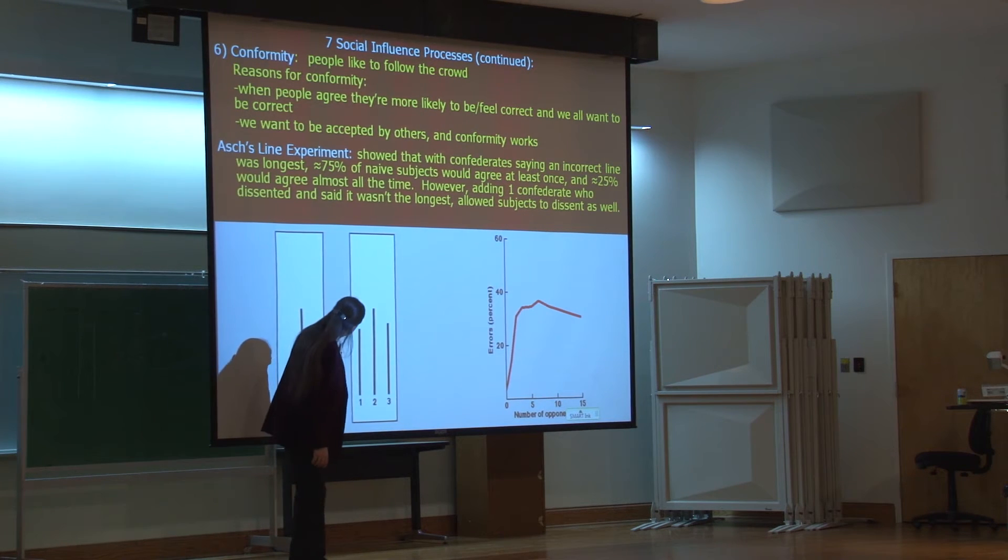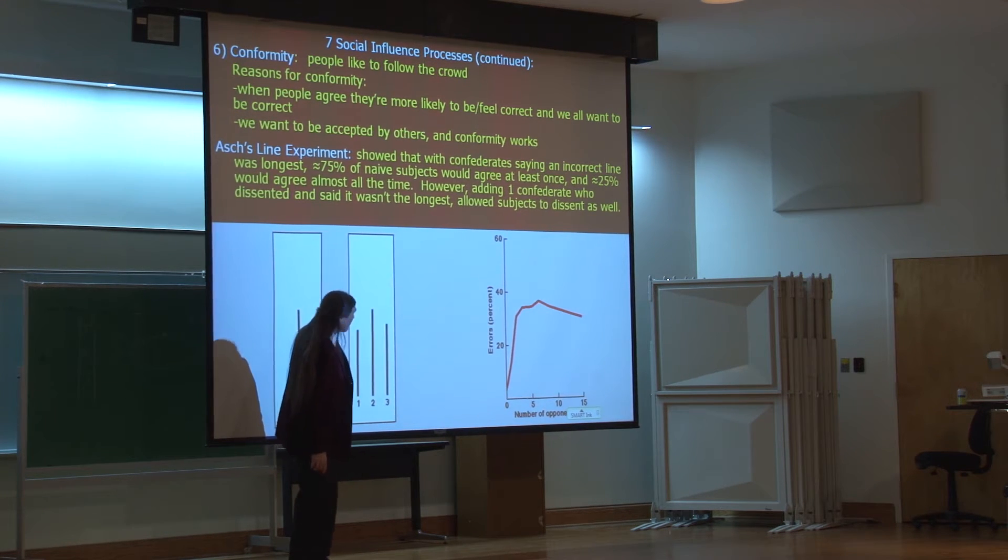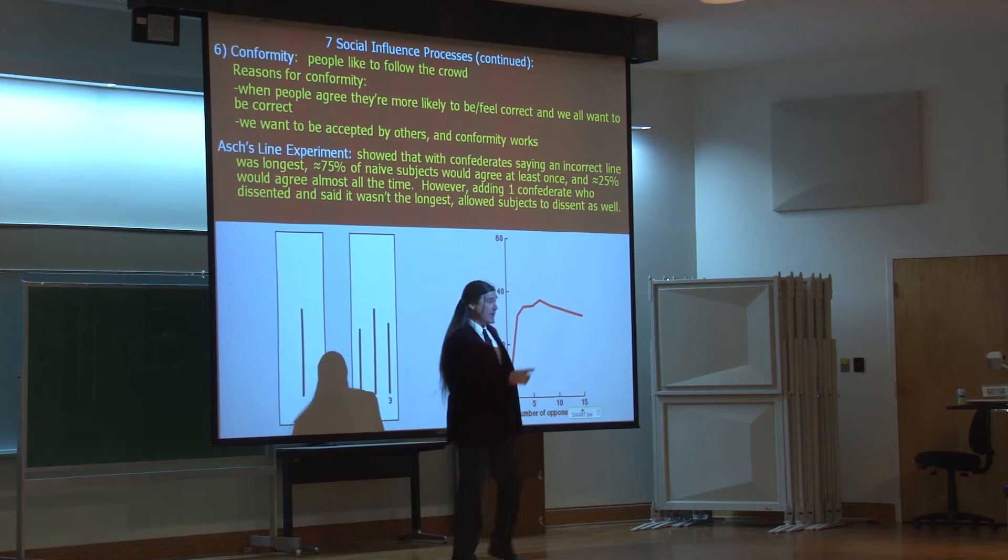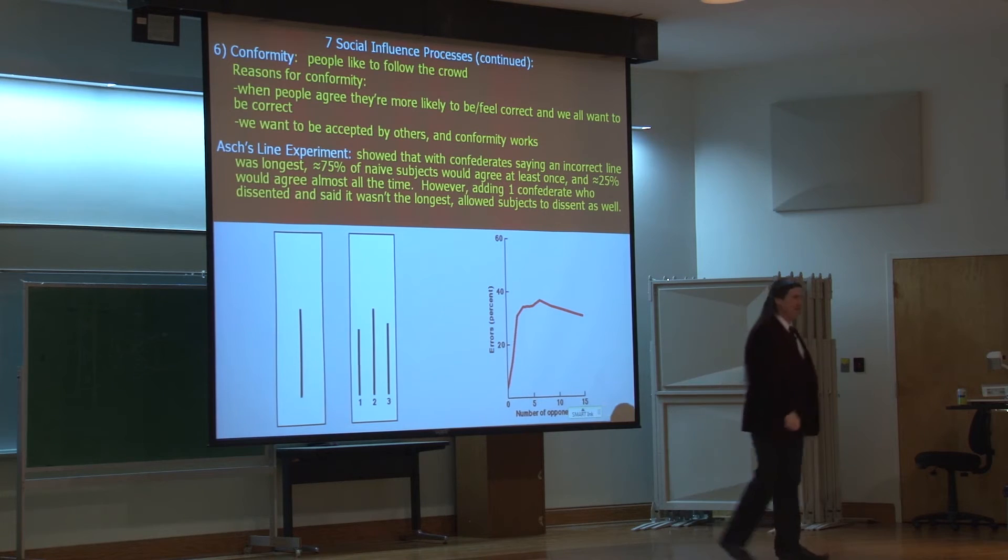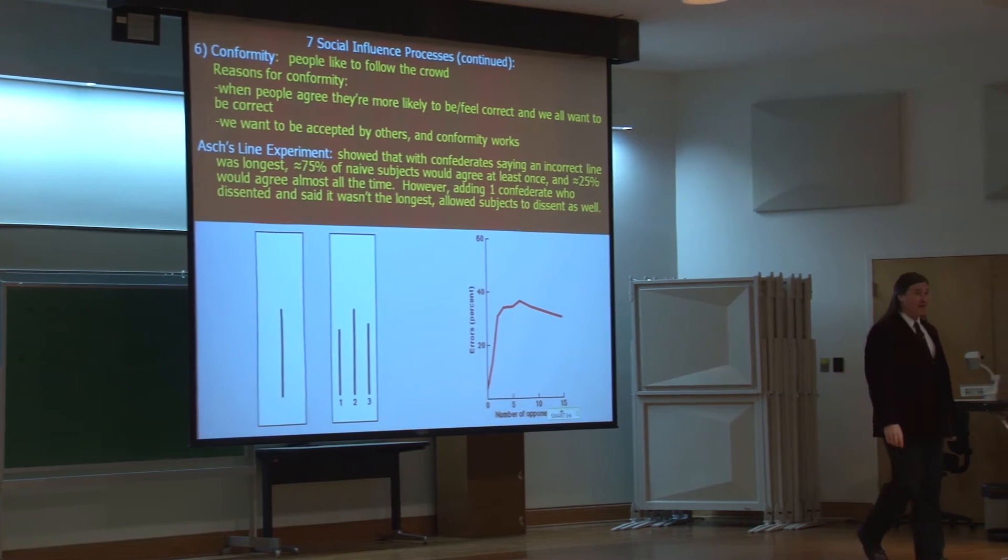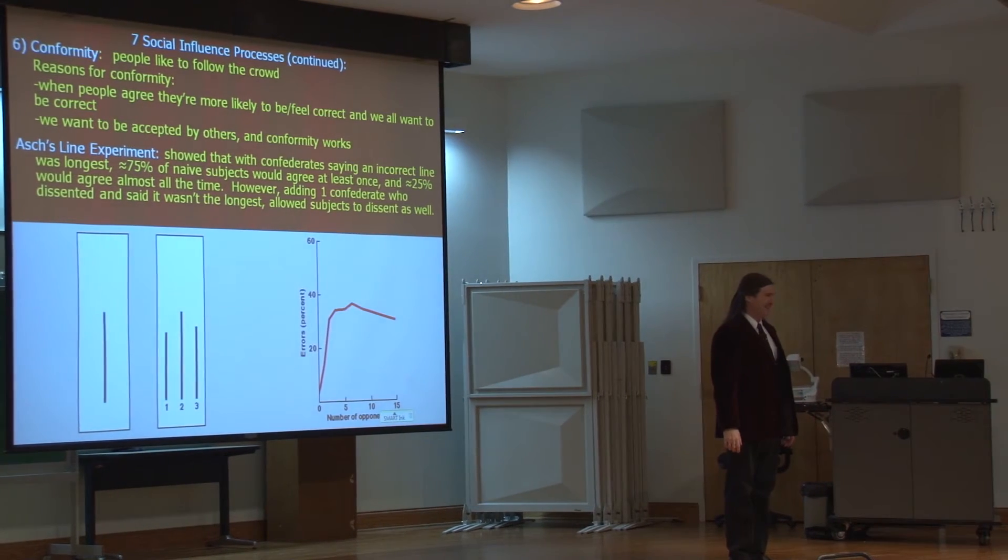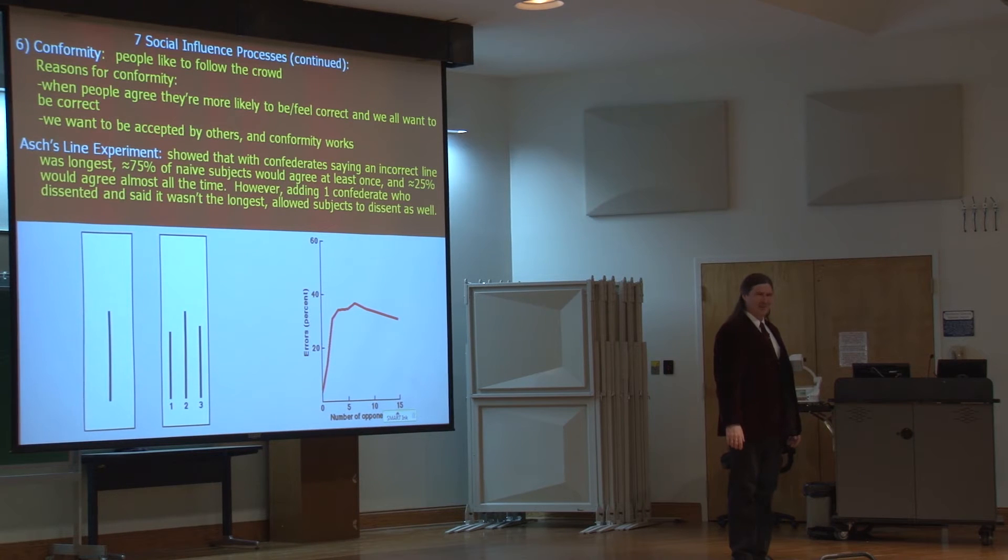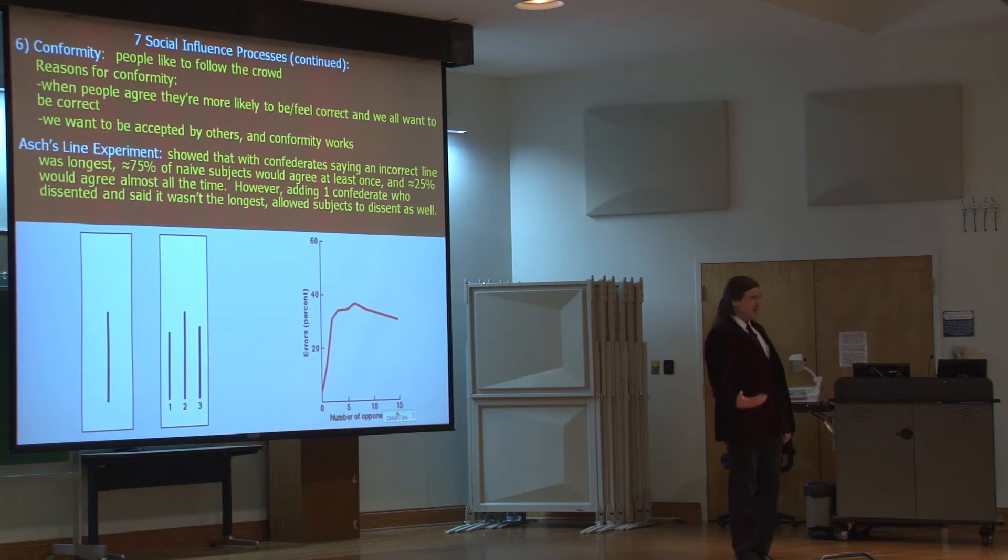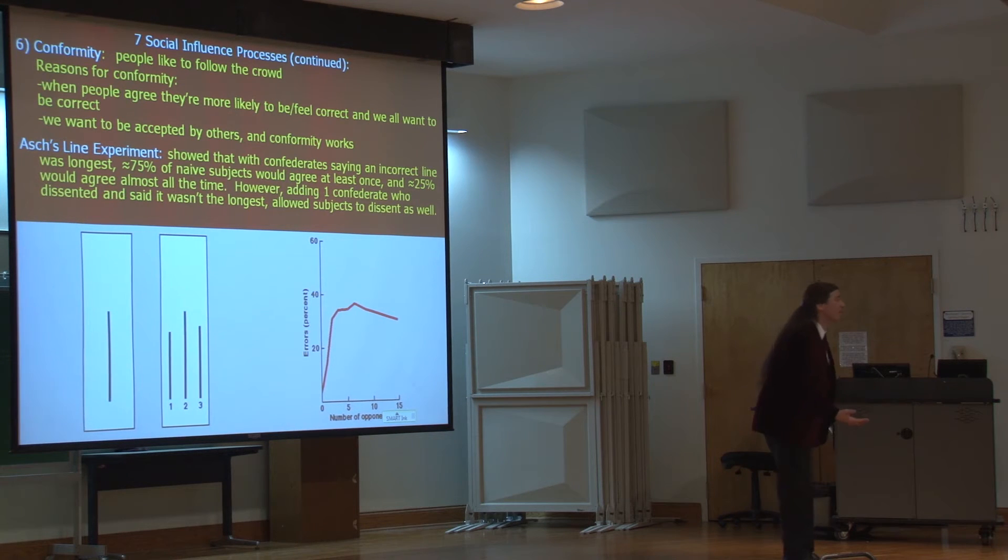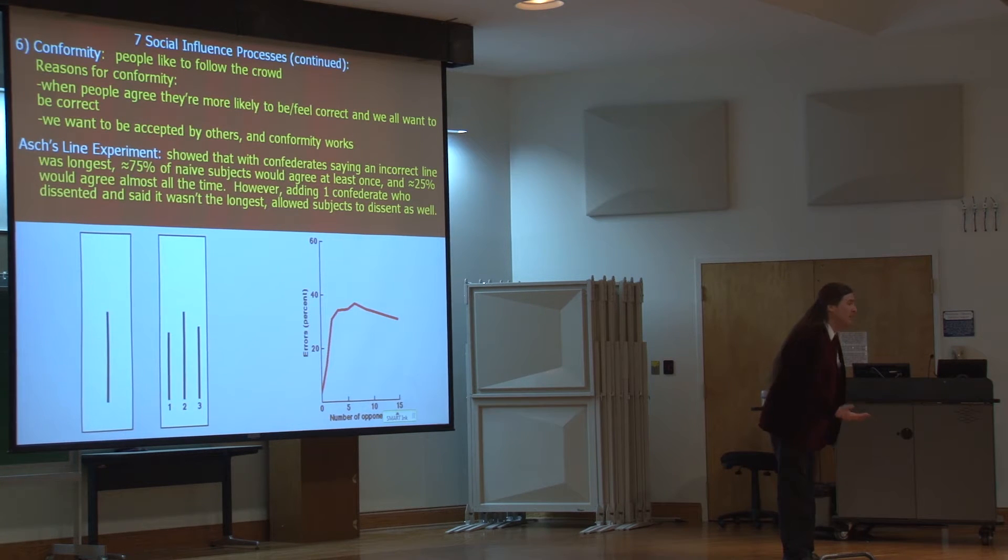And the first person says, number three. Now you see it's number two. I see it's number two. And the participant sees it's number two. And they probably are thinking to themselves, idiot. How could you possibly reach that conclusion? Right? That's probably what they're thinking. Then the second person says, three.